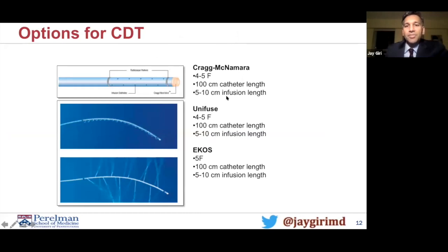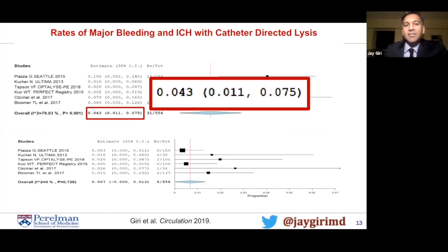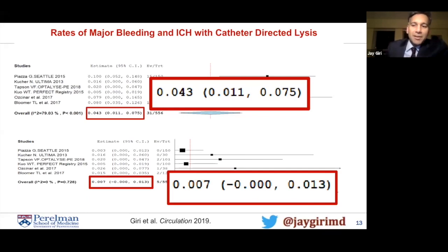Options for catheter-directed lysis include the Cragg-McNamara and Unifuse catheters — simple catheters with side holes — and the ECOS catheter, which involves ultrasound assistance to theoretically fragment the clot as lytics are delivered. Bleeding rates with catheter-directed lysis: major bleeding rates in a meta-analysis of five prospective studies were about 4%, and intracranial hemorrhage rates were 0.7%, with upper confidence intervals around 1.3% — not far from the 1.5% with systemic lytics. The data available is suggestive that catheter-directed lysis is safer, but there haven't been true apples-to-apples comparisons. When weighing lytics versus embolectomy, keep in mind that lytics carry increased major bleeding and intracranial hemorrhage, while embolectomy is not associated with these, though it has a significant learning curve.